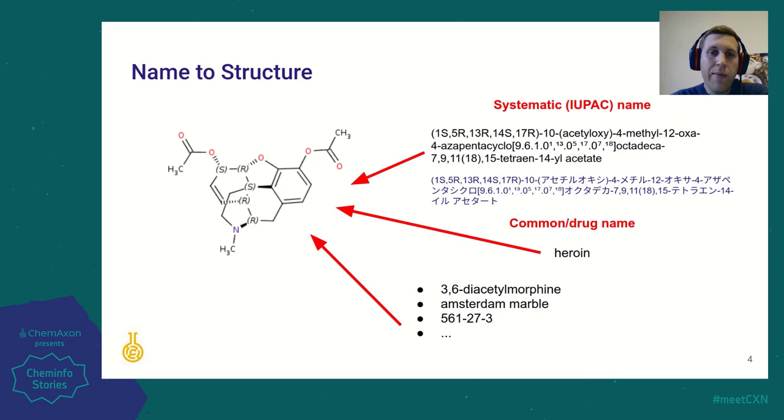You can find chemical names in patent documents in various formats, often with misspelled or incorrect IUPAC names. ChemAxon name-to-structure technology is capable of recognizing all of these different formats, and the built-in error correction can tolerate most of the names regardless if they have some errors.